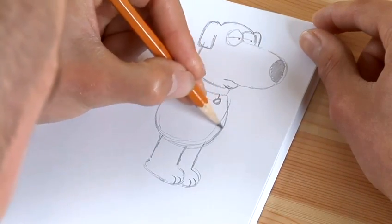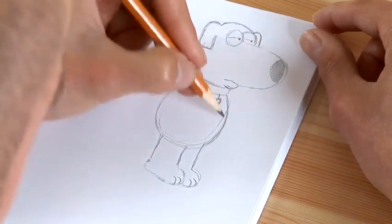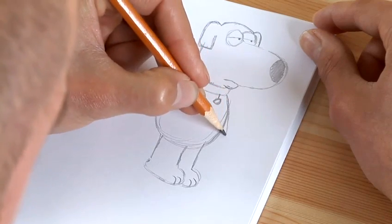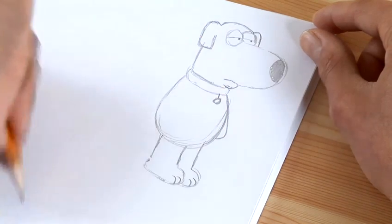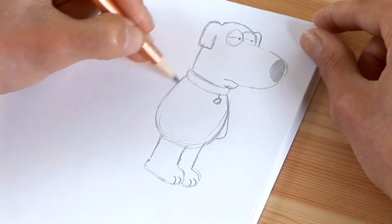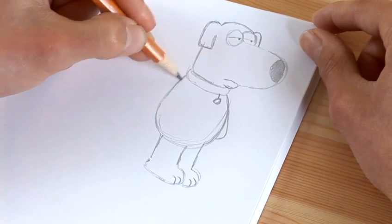Now you can only see part of his arm here. So you're just going to come out. Just take it back into the body. It's just a nice little line like that. And this bit here is not going to be the back of his body. It's going to be the back of his arm.